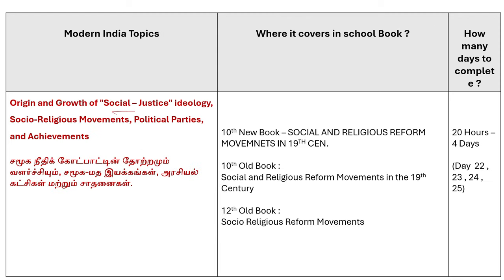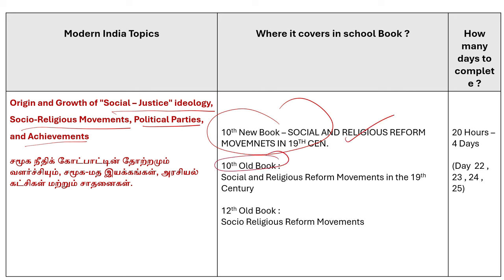Next, we are going to study social justice ideology, social religious movements, political parties and their achievements. This is covered in the 10th new book on social religious reform, and also in the 10th and 12th old books with one lesson each. You can refer to this topic. We will study the same topic for the main subject. This is about 4 days — Day 22, 23, 24, and 25.